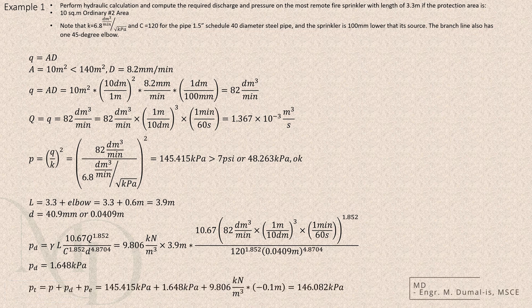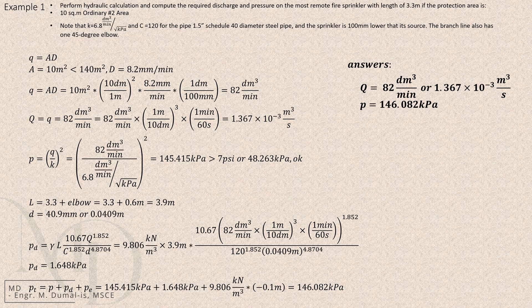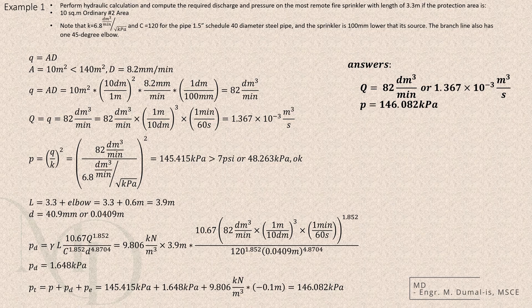Finally, we add together the pressure demand, the pressure drop, and the elevation factor to determine the total required pressure. After completing all computations, we find that the total discharge is 82 cubic decimeters per minute, and the final pressure is 146.082 kilopascals.